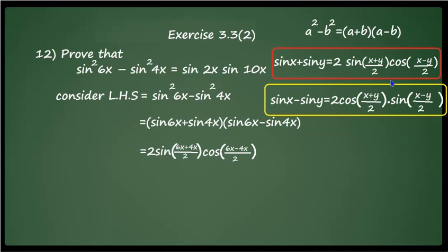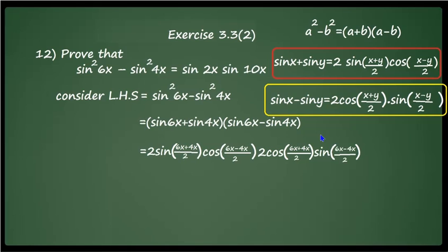Applying the formula to the second term sin 6x − sin 4x, sin x − sin y = 2 cos((x+y)/2) · sin((x−y)/2). With x = 6x and y = 4x, we get 2 cos((6x+4x)/2) · sin((6x−4x)/2), which equals 2 cos(10x/2) · sin(2x/2) = 2 cos 5x · sin x.